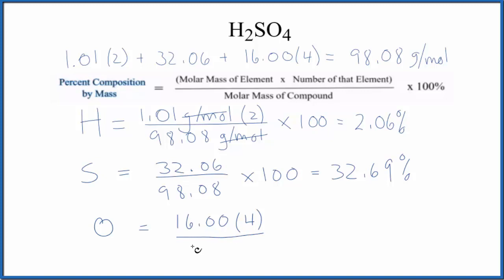We divide by the molar mass for the compound, multiply by 100, and we end up with 65.25%. These numbers should add up to very close to 100%, if not exactly.